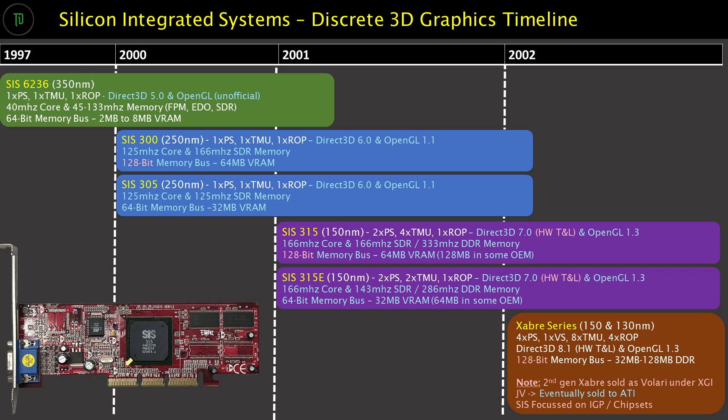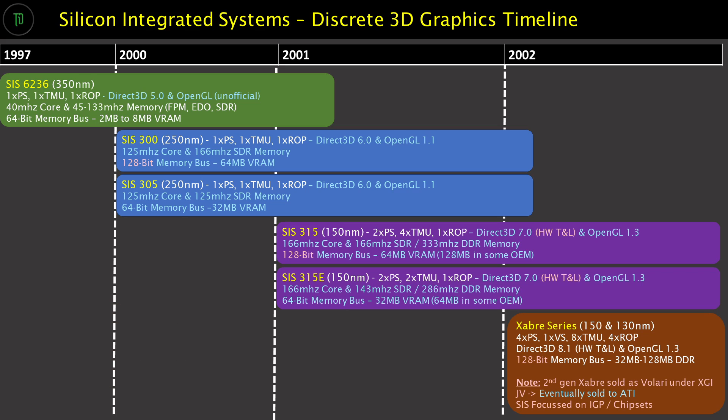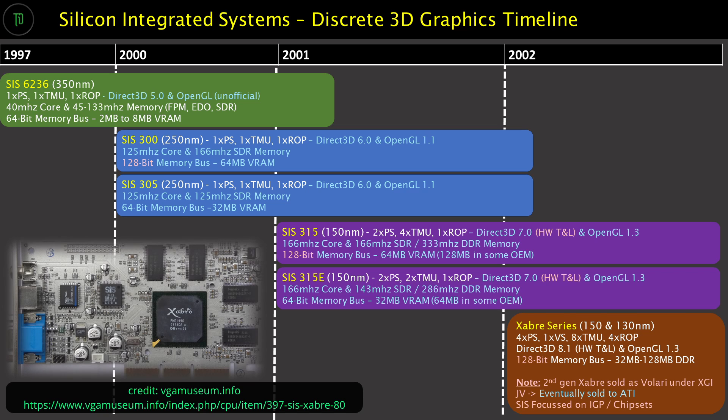SIS would reduce the memory clock to 143 MHz but like the 315 this could also support DDR. A year later the Zaber series was released, which would sadly be the final one from SIS as they would go on to form part of XGI with Trident and continue selling the Zaber and the revised Volari family of GPUs under the XGI label instead.